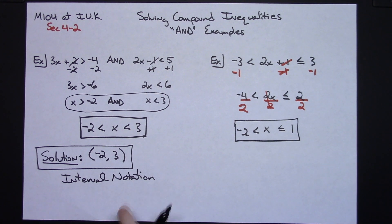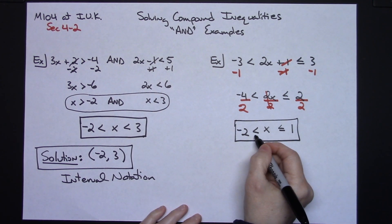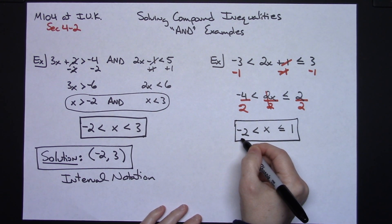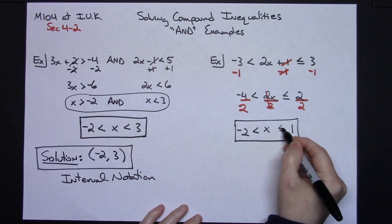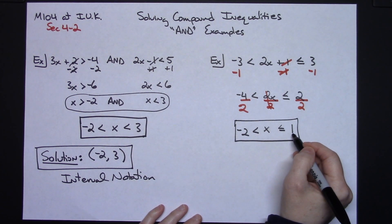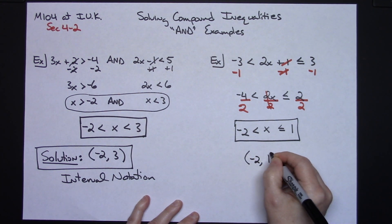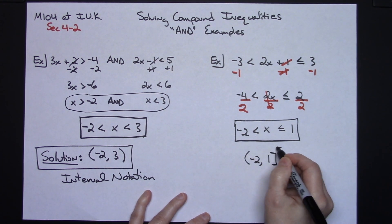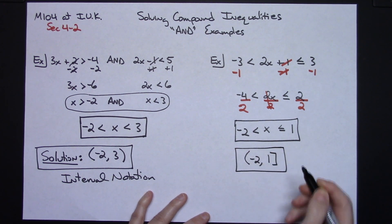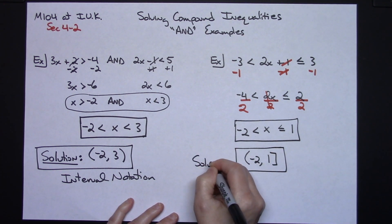And again, if I want to put it in interval notation, I have a less than sign here, which means the negative 2 is not going to be included. I have a less than or equal to sign on the 1, which means 1 will be included. So, curvy bracket negative 2 to 1 with a square bracket. So there's my solution there in interval notation.